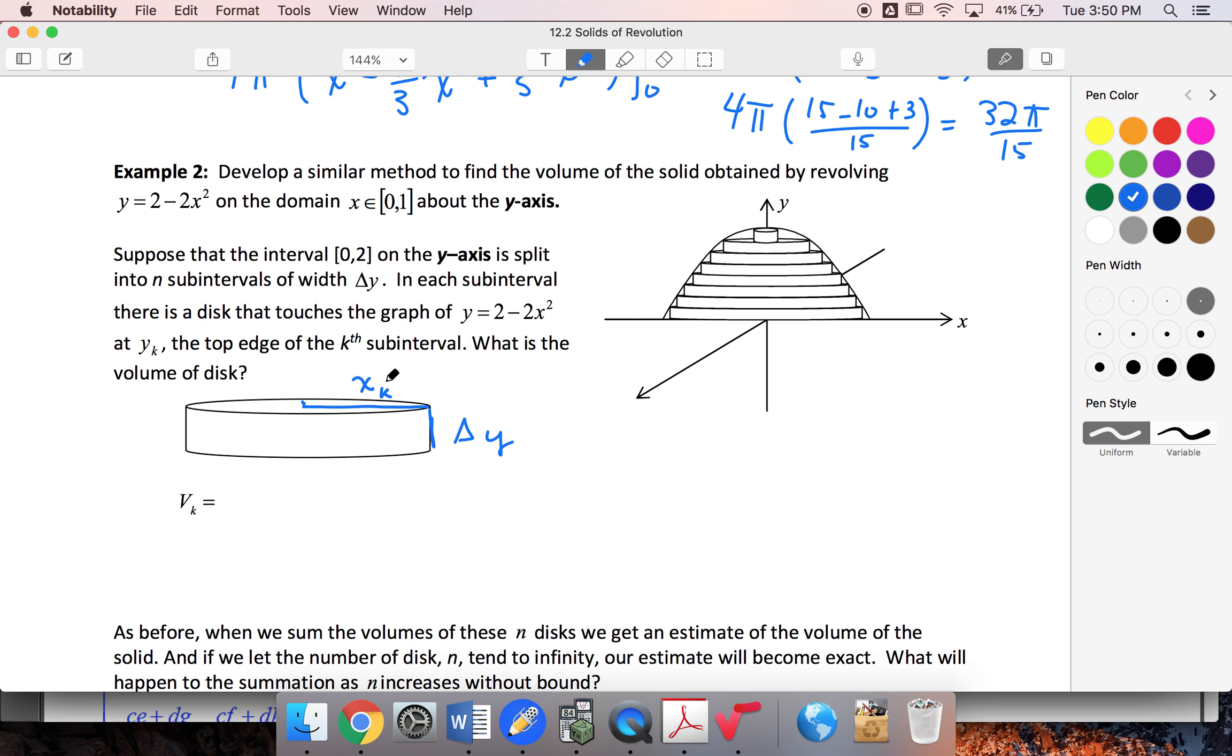So to find that, I know that I need to isolate my x. So y was equal to 2 minus 2x squared. This is the same as if I isolate the x, I'm going to get 2x squared is equal to y plus 2. If I'm looking at just this half of the curve,